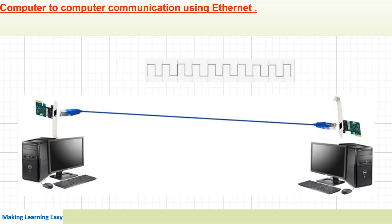For understanding purposes, let's look at how you can connect one computer to another. For computer-to-computer communication using an ethernet port, as you can see in the screenshot, suppose you have two desktops — on each CPU you will have an ethernet port. You can use the ethernet cable to connect both computers, and this ethernet cable carries electrical signal pulses.